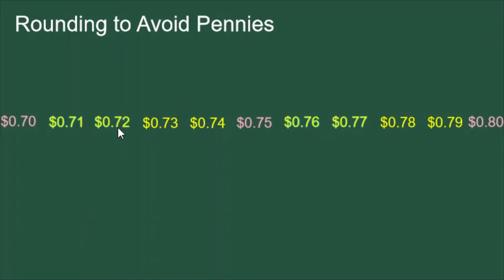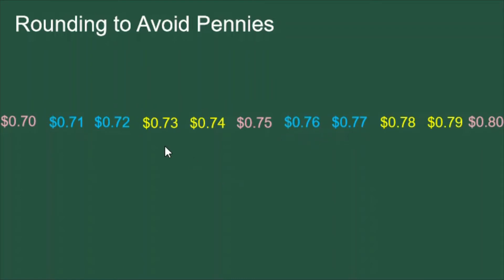For four of these values, which I'm showing in blue, we round down. 71 cents and 72 cents are just a little bit more than 70 cents, so we round the value down to 70 cents. 76 and 77 cents are just a bit more than 75 cents, so we round those values down as well.